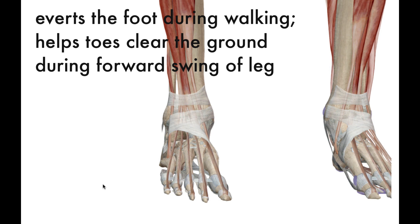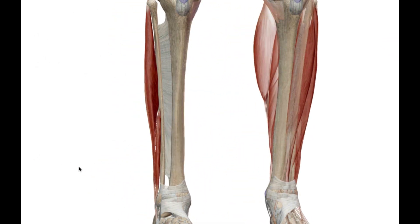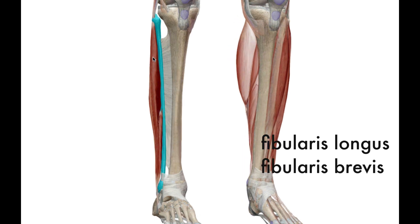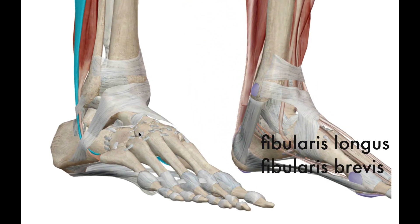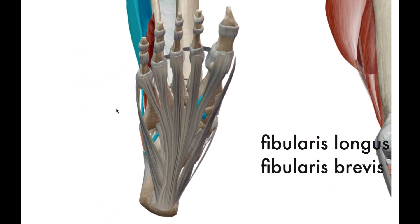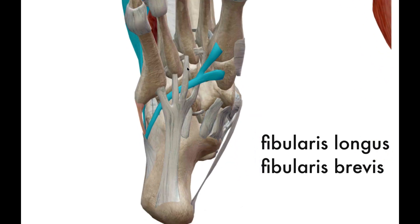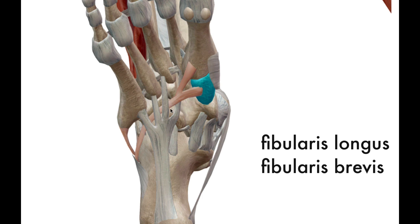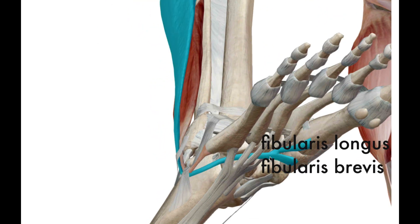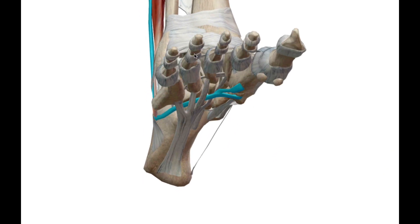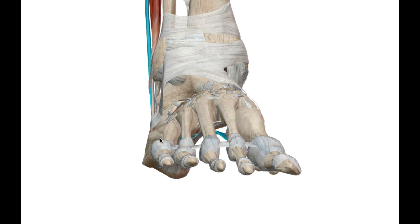Now for the lateral compartment, which comprises two muscles — both named fibularis because they originate at the fibula. The fibularis longus originates at the head of the fibula and part of the shaft, and inserts at the plantar aspect of the foot, traversing right underneath the plantar fascia. It connects to the first metatarsal and the cuneiform. When this muscle contracts and shortens, it pulls on the tendon from underneath, causing the foot to evert.